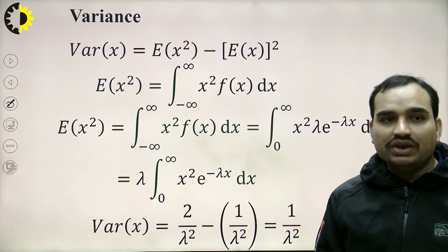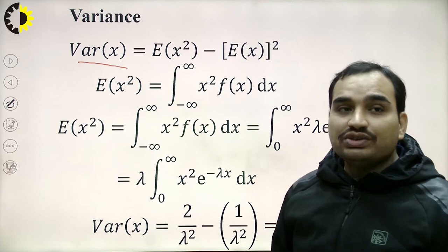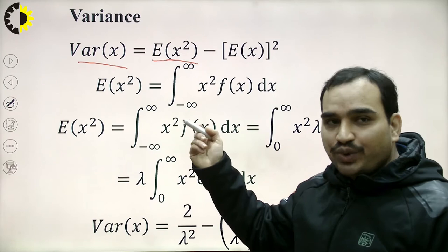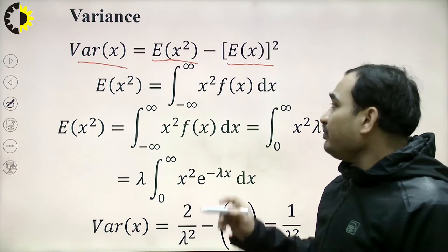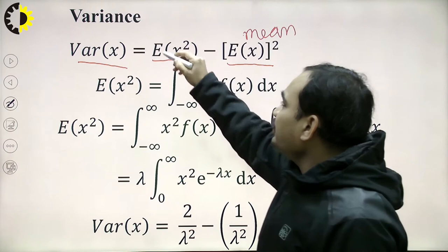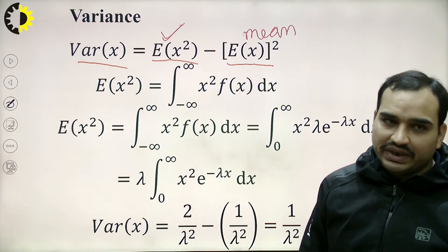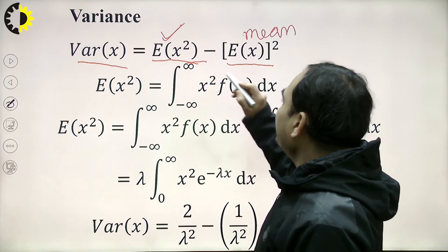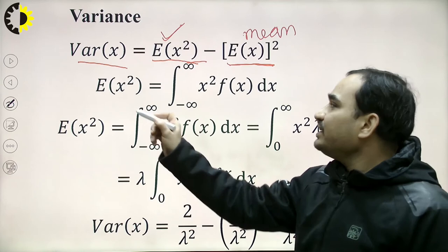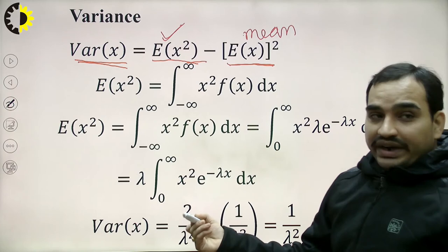Now let us take the variance of the exponential distribution. The variance of random variable x is given by Var(X) = E[X²] − (E[X])². We have already calculated the value of mean. So we need to calculate E[X²], then substitute and take the mean whole square to get the variance.